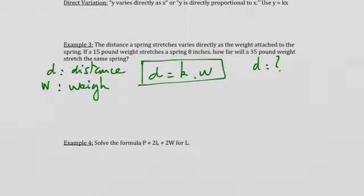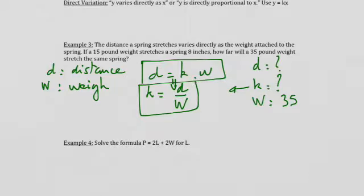Okay? To find D, I need to know K, and I need to know W. W is 35 pounds. K, they are not telling me what is K when W is 35. So, I need to find K. Well, to find K, I'm going to use this formula and express K by itself. K is supposed to be D divided by W. So, now, from this formula, I know that when D equals 8 inches, the weight associated is going to be 15 pounds. So, I know now the value of K. K is going to be equal to 8 divided by 15.